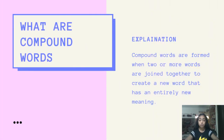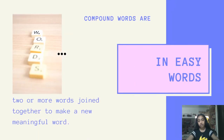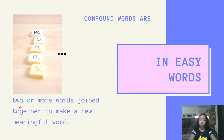A compound word is when two or more words are joined together to create a new word with its new meaning. In easier words, when two or more words are joined together to make a new meaningful word, they are compound words. For example, I take one word with its own meaning and another word with its own meaning. Now, when I join those two words together, it makes a new word with its own new meaning — that is a compound word.